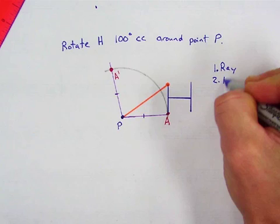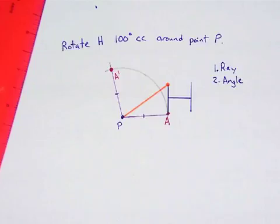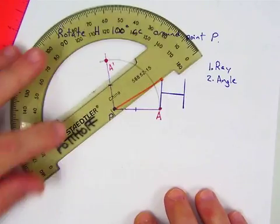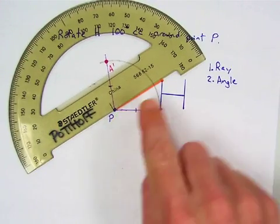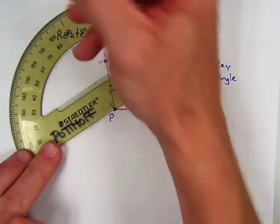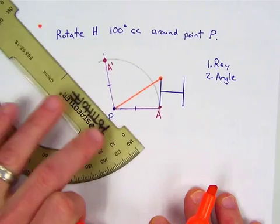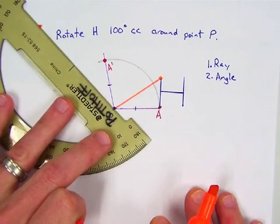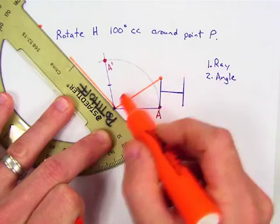Step two is to make your angle. So we will use a protractor again. So we set the center. Line it up with zero. We go around 100 degrees counter-clockwise. Make our point.